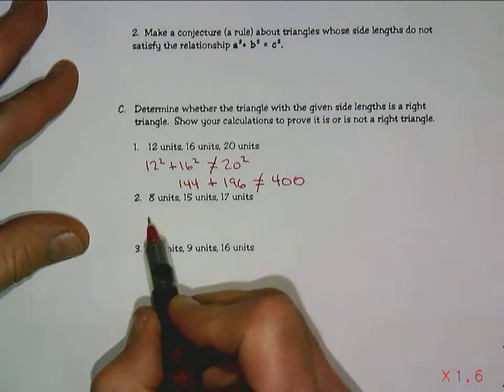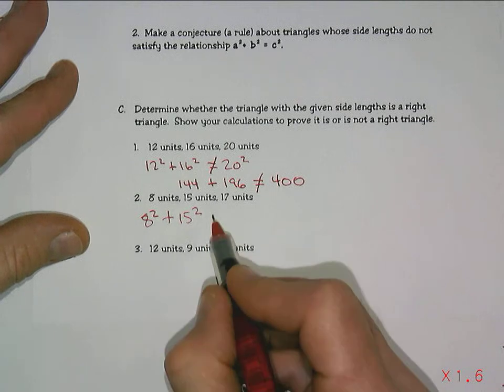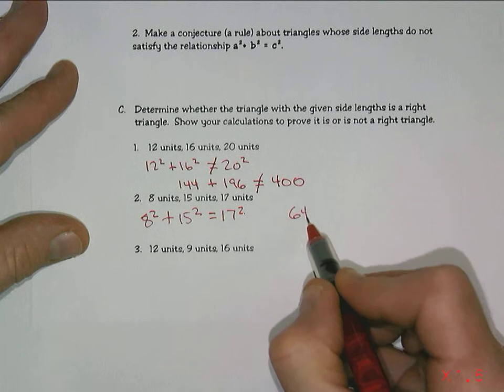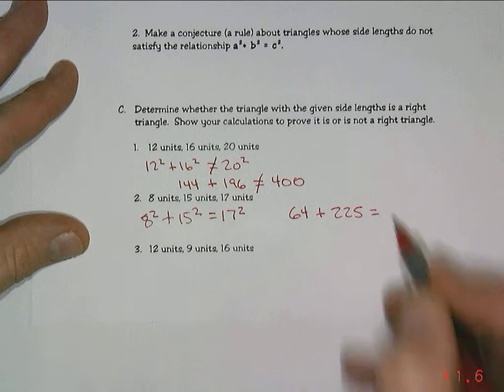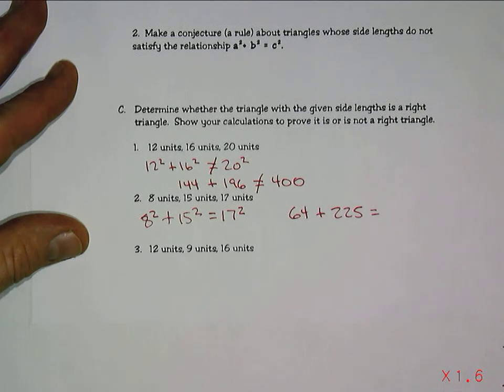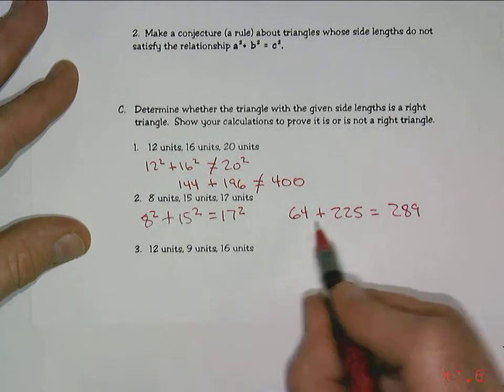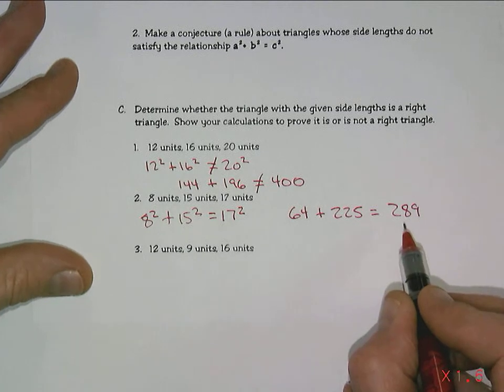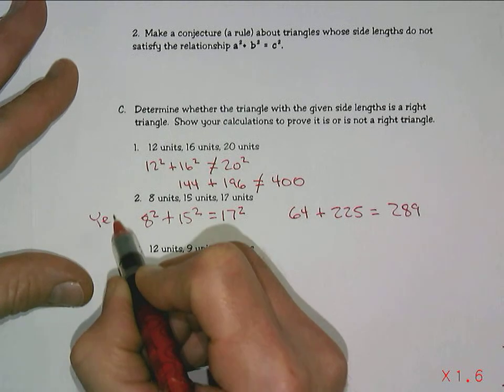Try a couple more: 8 squared plus 15 squared, and the question is, does that equal 17 squared? We know 64 plus 225, which is 15 squared, and the question is, does that equal 289? 64 plus 225 does equal 289, so this would be a right triangle. So we have a yes, and a no.